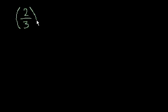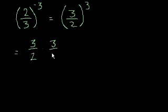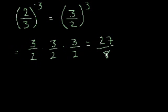Let's do some more problems. What if I had 2 over 3 to the negative third power? Once again, to make it simple, whenever I see that negative in the exponent, I want to get rid of it. So I immediately take the reciprocal of the base — the reciprocal of 2 thirds is 3 over 2 — and I raise that to the positive third power. What changed between the left and right side? The 2 over 3 I flipped, and I turned the negative 3 into a positive 3. This becomes a level 1 exponent: 3 halves times 3 halves times 3 halves, and that equals 27 over 8. So 2 thirds to the negative 3 is equal to 27 over 8.